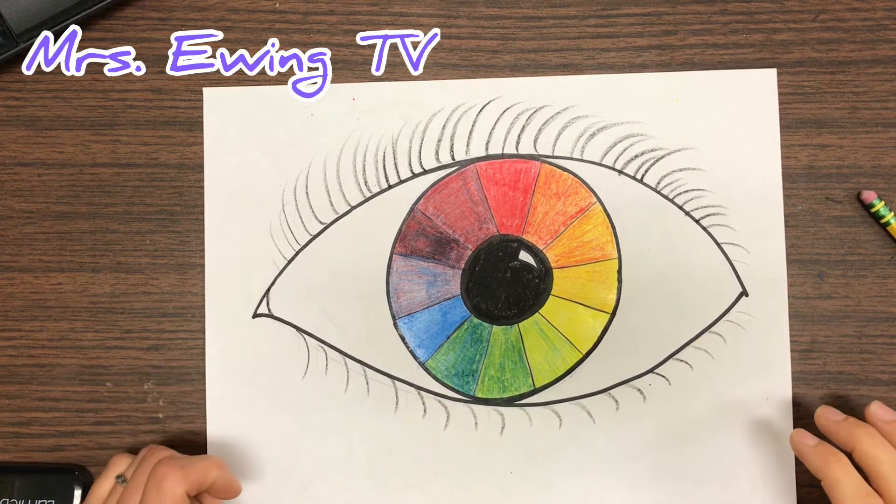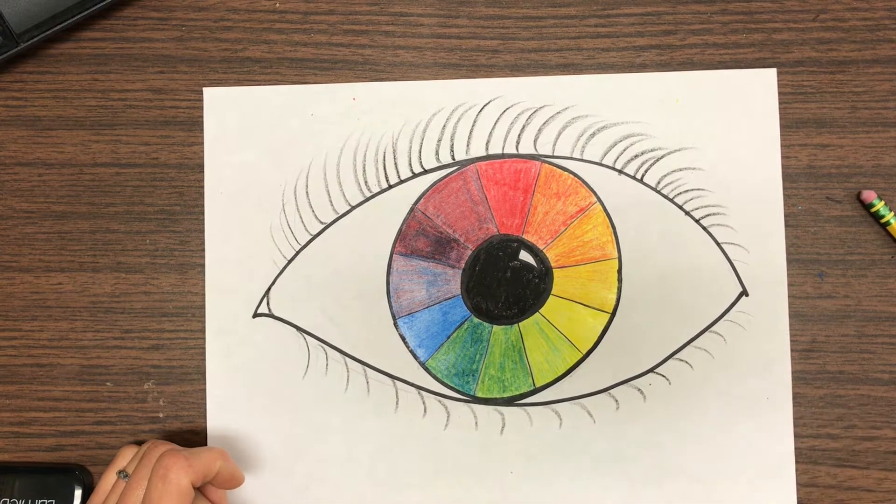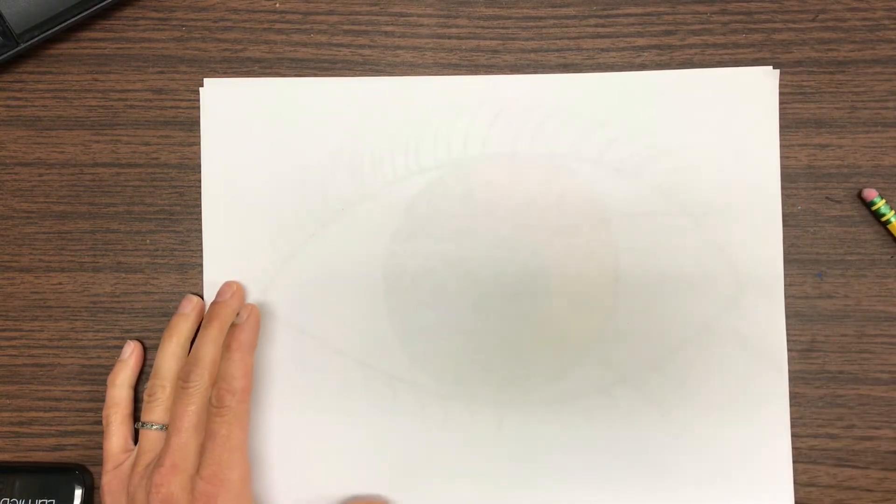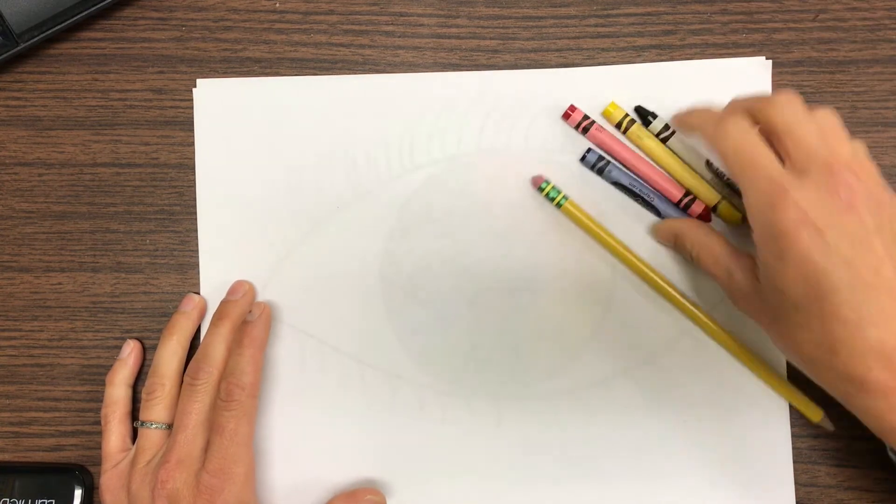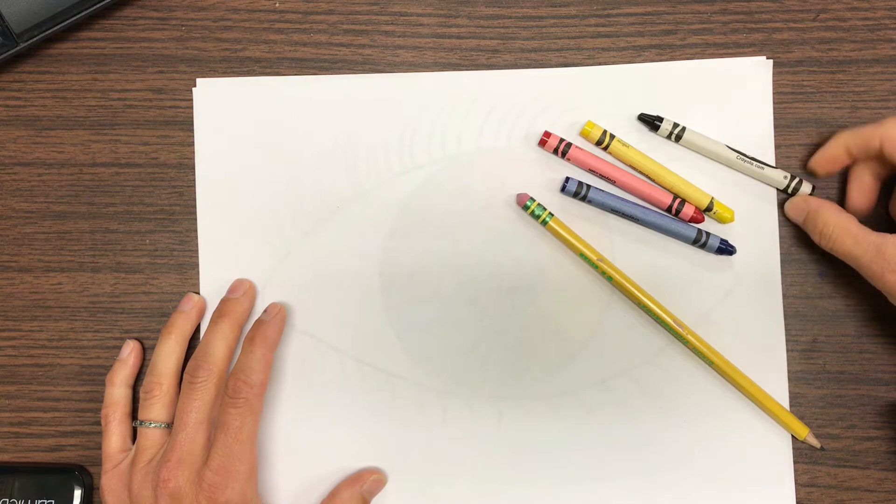I'm going to show you how to make a color wheel that's in the shape of an eye. You're going to start with a piece of white paper. If it has lines that's okay. You'll need a pencil and I have the primary color crayons: red, yellow, blue. And I have a black crayon just to outline and make things stand out.